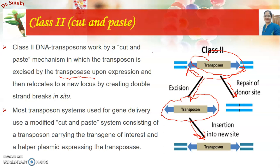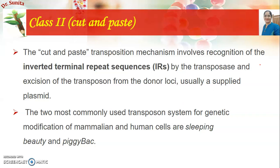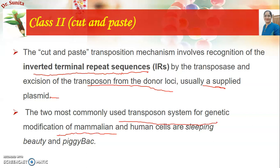How can transposons be used as vectors? Transposons are naturally transferred, so if desired DNA is inserted into a transposon, it can be used as a gene delivery vehicle or vector. The cut-and-paste mechanism relies on inverted terminal repeat sequences at the recognition sites, and excision of the transposon from the donor is usually from plasmids. The most commonly used transposon systems for genetic modification of mammalian and human cells are sleeping beauty and piggyback. The P elements in Drosophila are another well-known example.